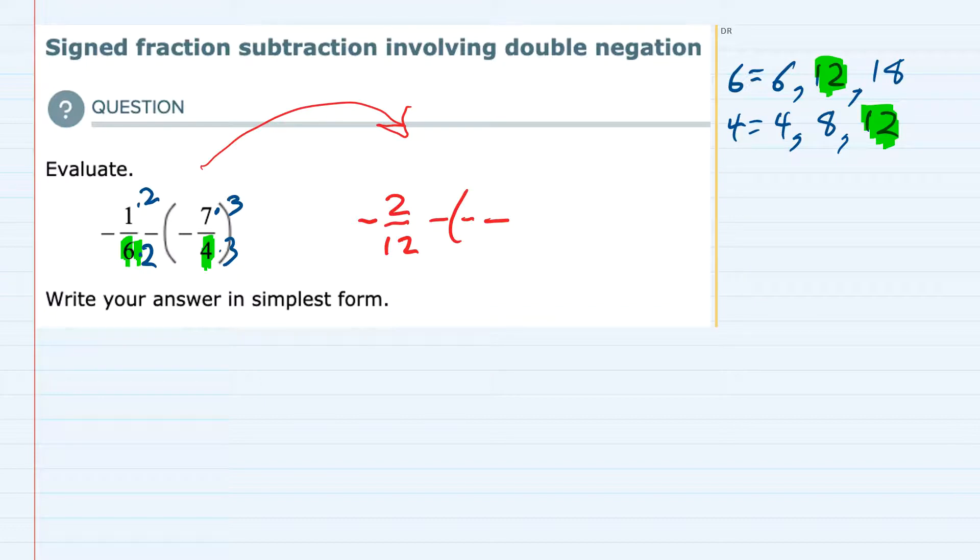Just keeping the rest of the problem the same, but doing the multiplication. 7 times 3 in the numerator of the second fraction is 21. 4 times 3 in the denominator is 12.